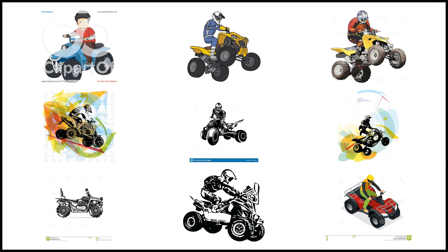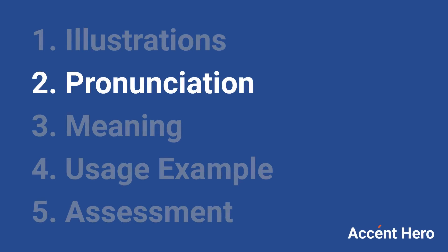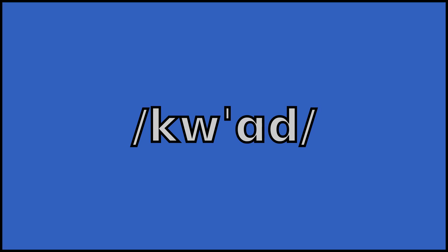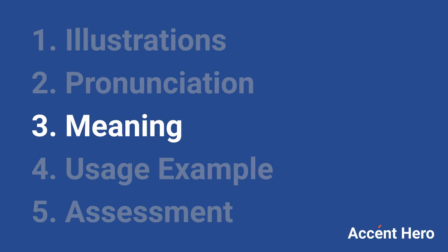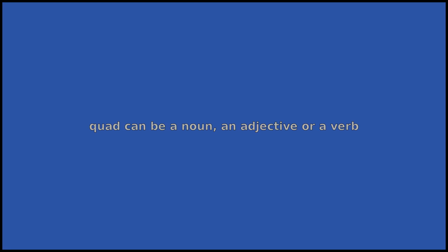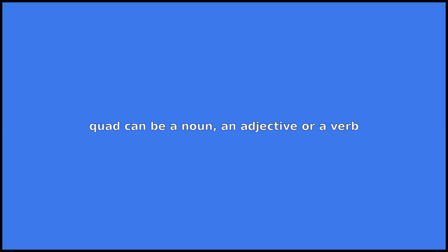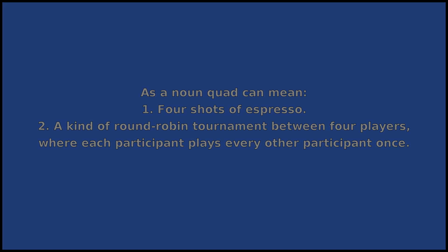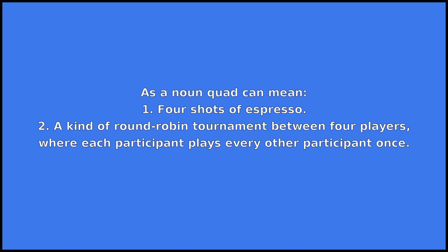Quad. Quad can be a noun, an adjective, or a verb. As a noun, quad can mean: 1. Four shots of espresso. 2. A kind of round-robin tournament between four players, where each participant plays every other participant once.